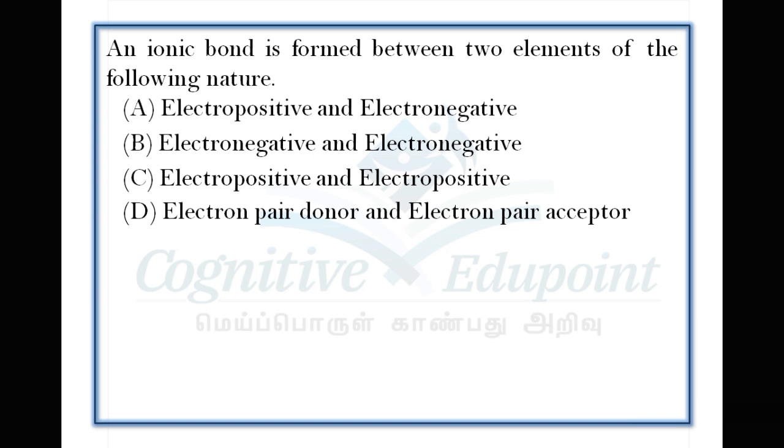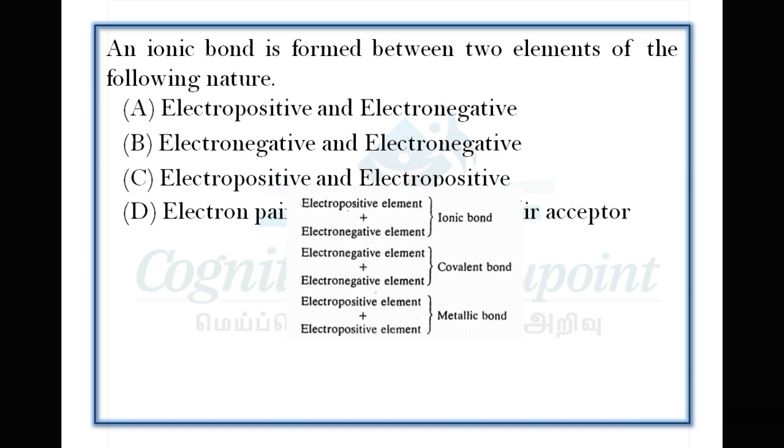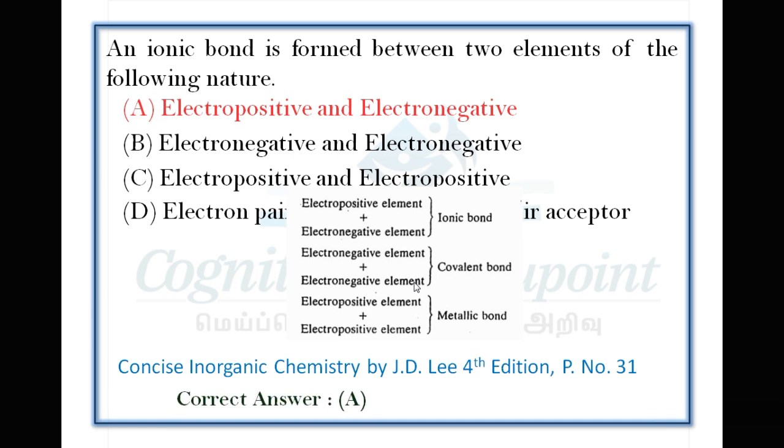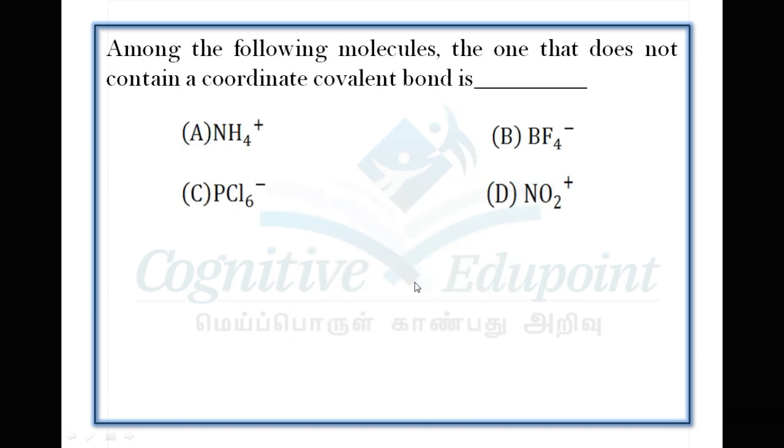Next question: An ionic bond is formed between two elements of the following nature. Very easy question. An ionic bond forms between two oppositely charged species through electrostatic attraction. So, electropositive and electronegative elements form ionic bonds. Electropositive and electronegative form covalent bonds. Electropositive and electropositive form metallic bonds. Correct answer is A.